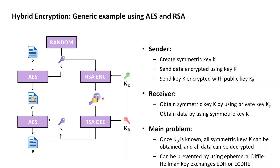Bob then sends both the ciphertext together with the encrypted key to Alice, who then, in a first step, takes her private RSA decryption key and decrypts the received encrypted key K back into the symmetric AES key K that Bob freshly generated. Alice can then proceed to recover the original plaintext by simply using this AES key to decrypt the received ciphertext with AES back into the plaintext Bob originally sent.